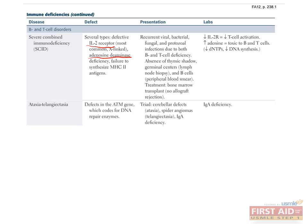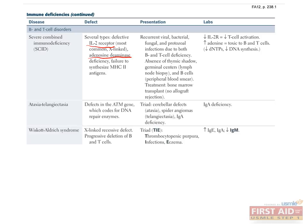Ataxia telangiectasia results from a defect in the ATM DNA repair enzyme gene. It presents with a classic triad: cerebellar defects leading to ataxia, spider angiomata (a form of telangiectasia), and IgA deficiency. Wiskott-Aldrich syndrome results in the progressive deletion of B and T cells. Immunologically, this manifests with thrombocytopenic purpura, infections, and eczema, and is characterized by increased levels of IgE and IgA with decreased levels of IgM.